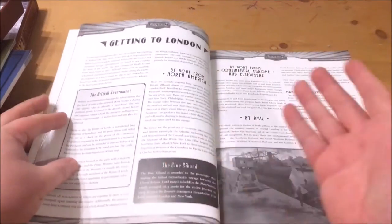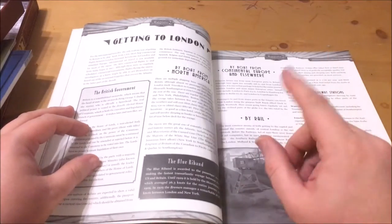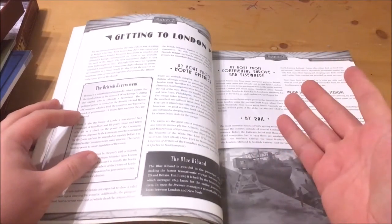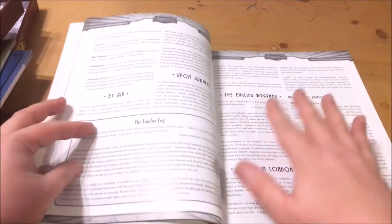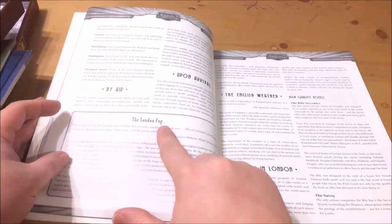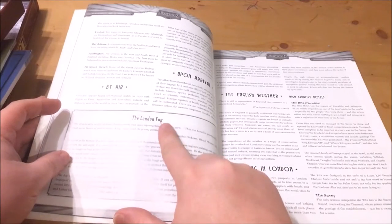Chapter 4 is Getting to London. This details the various methods of travel that were available at the time and what visitors would expect coming into the country. It then goes on to discuss the weather and includes details on most important characteristics of 1920s London, the fog.